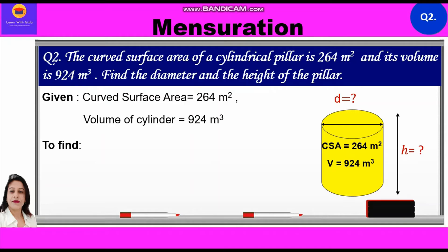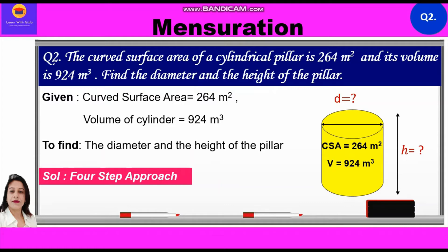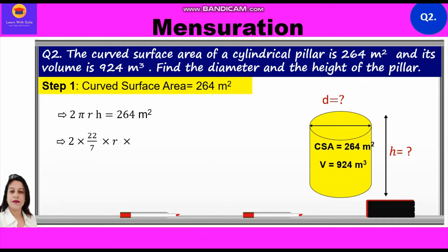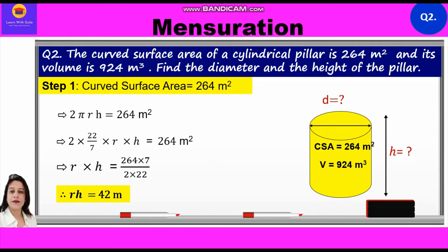This question involves a four-step approach. Step 1: curved surface area = 264 m², which implies 2πrh = 264 m². Substituting: 2 × (22/7) × r × h = 264. Cross-multiplying, rh = 264 × 7 / (2 × 22). Since we don't have individual values, rh = 42 meters.